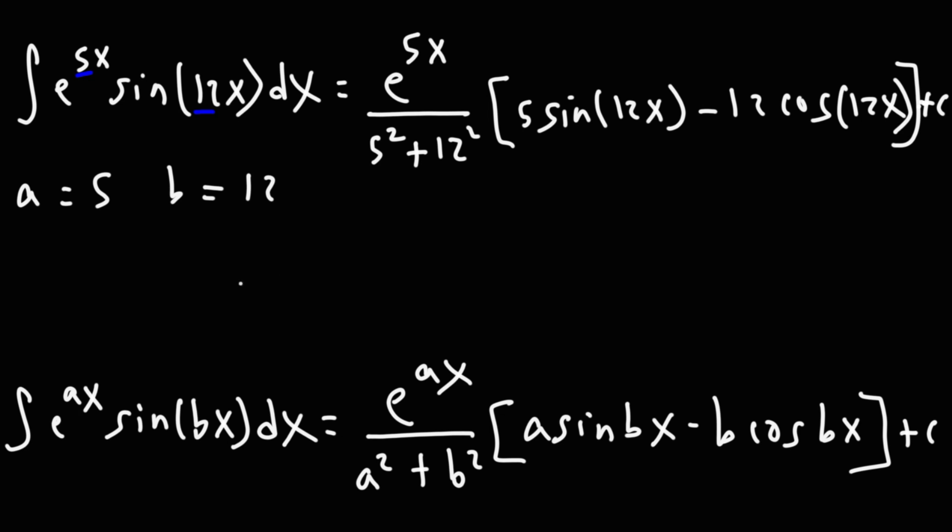So now let's simplify this answer. 5 squared is 25, 12 times 12 is 144, 144 plus 25 is 169. So we can leave the final answer like this.